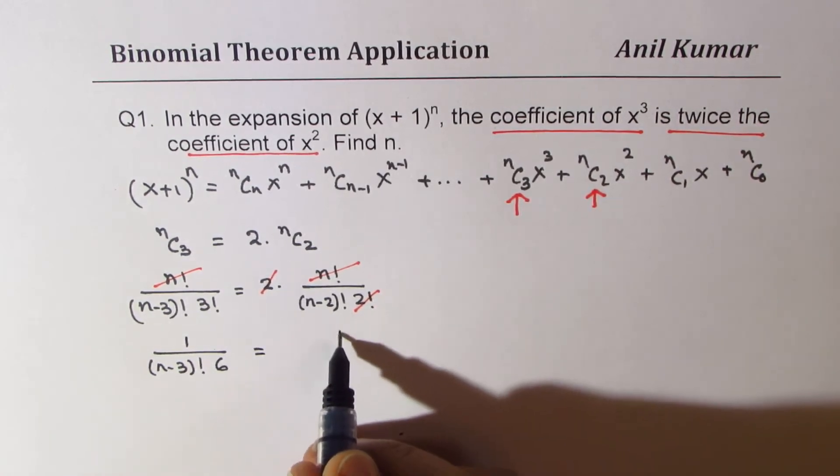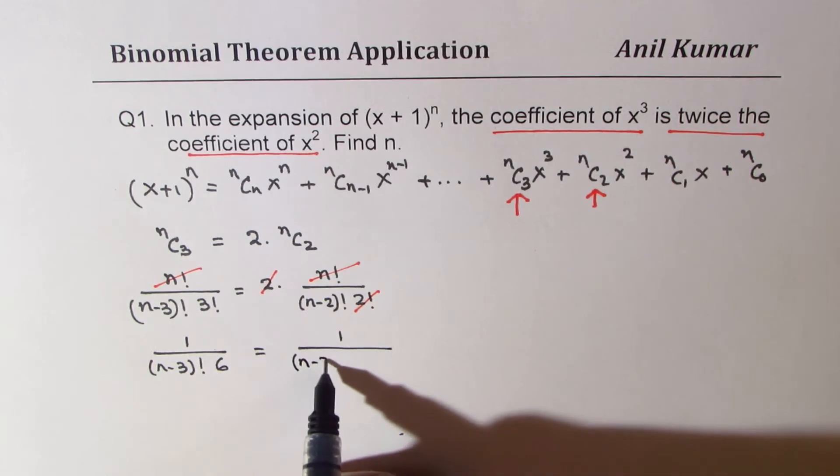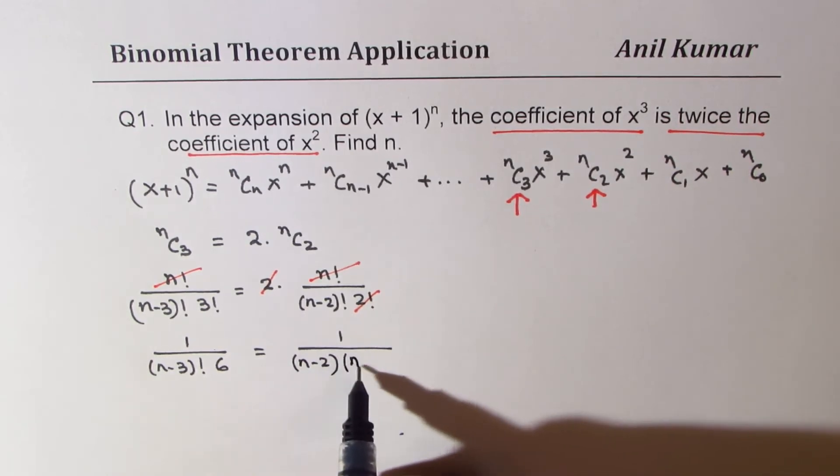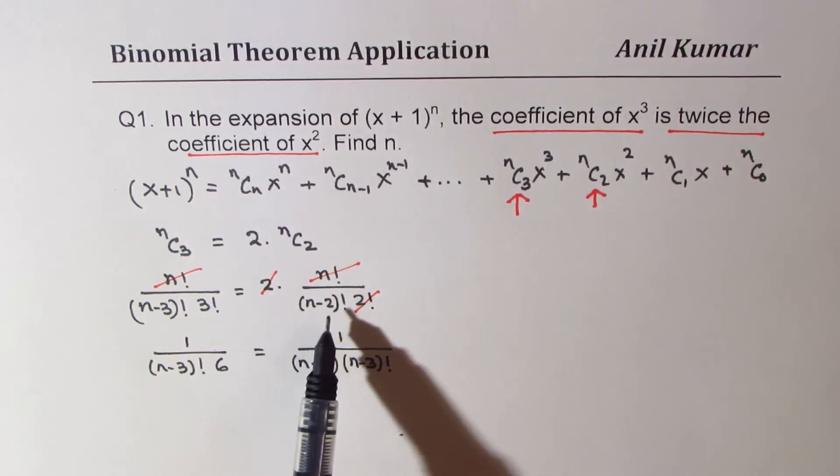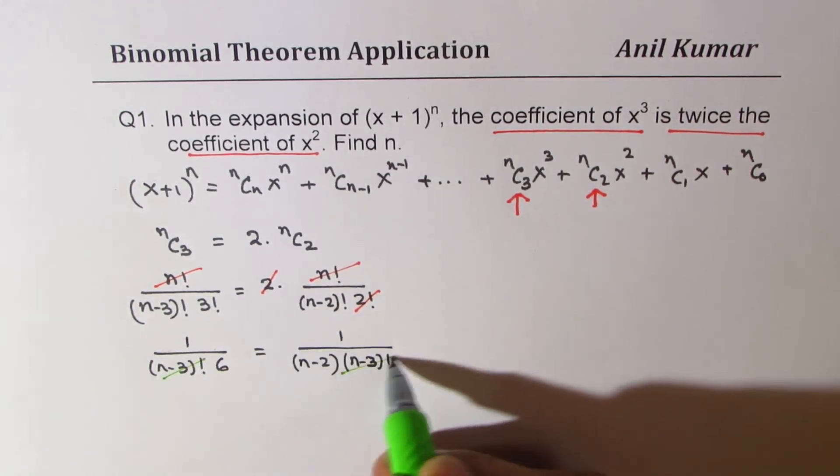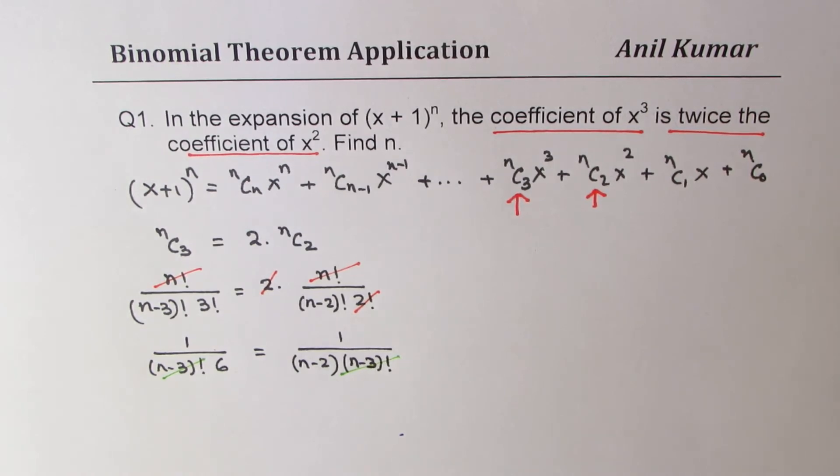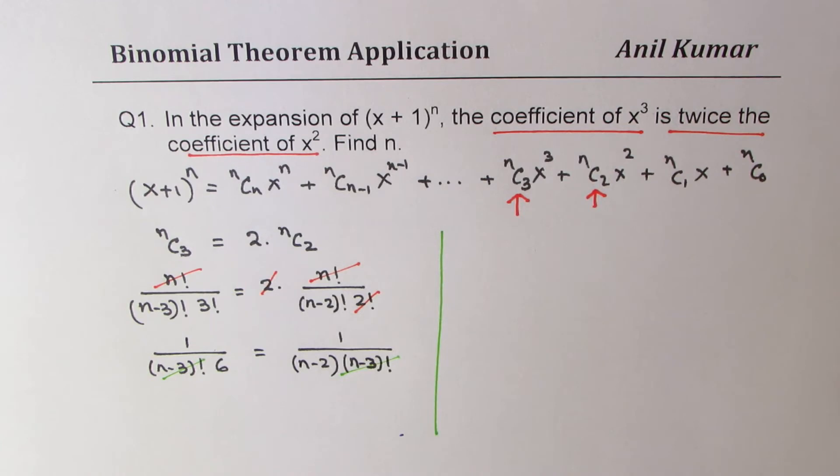And here, we get 1 / [(n-2) × (n-3)!]. Do you understand? We wrote (n-2)! as (n-2) times (n-3)!. So that gives us a much simpler equation. They cancel off. So what we have now is 1/6 equals 1/(n-2).